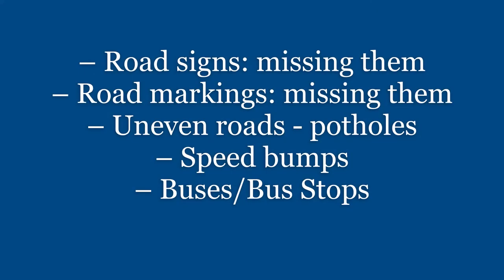Road signs — there's a chance of you missing them. Road markings — there's a chance of you missing them. Uneven roads, for example potholes or tree roots that make the concrete uneven. Speed bumps — in playground zones, school zones, and parking lots, for example.